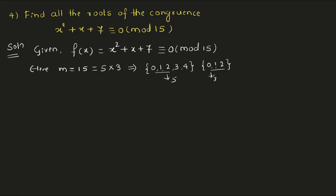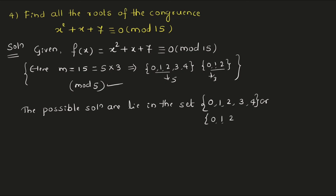Since we are considering mod 5: 5 minus 3 is 2, so minus 2 can replace 3; and 4 is equivalent to minus 1. So the possible solution set is 0, ±1, ±2. We will substitute these values in the function.